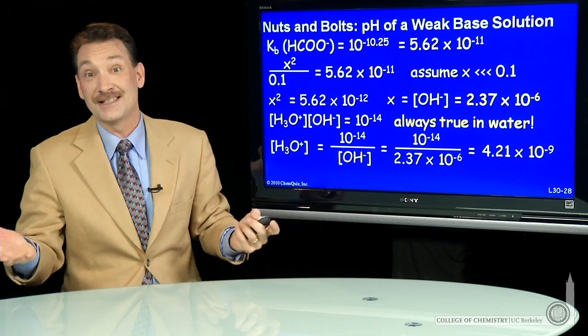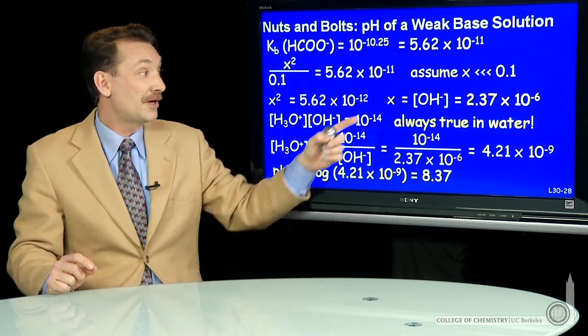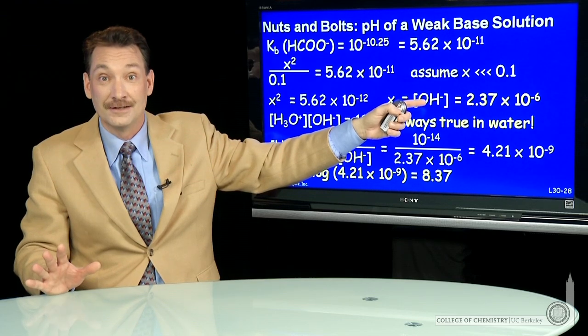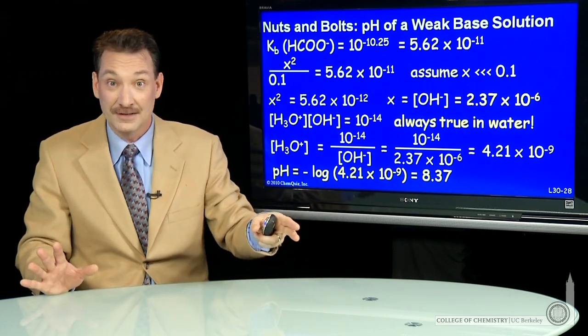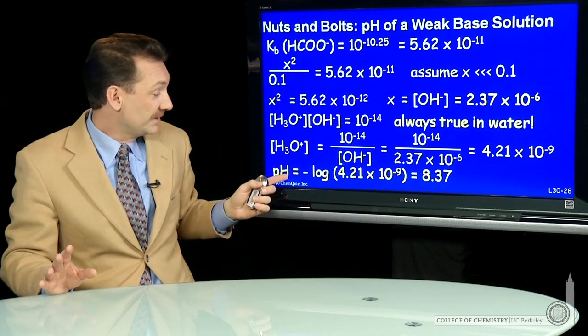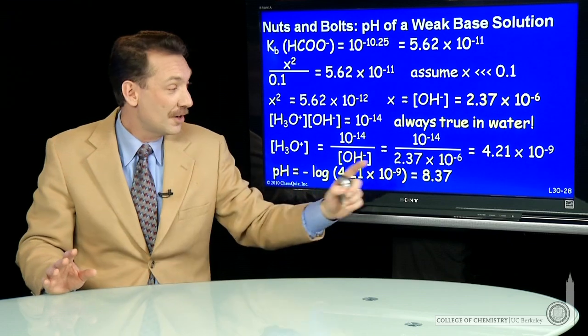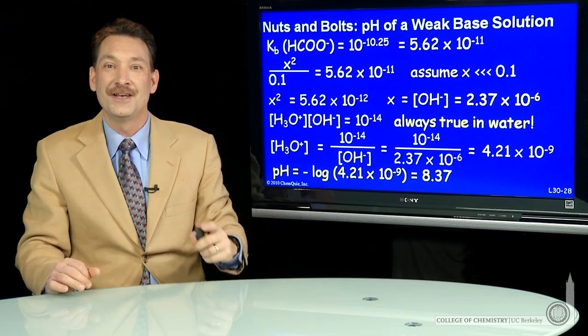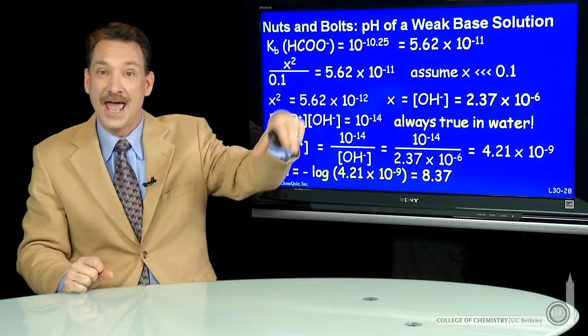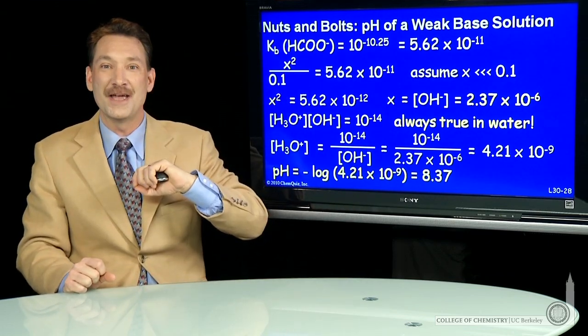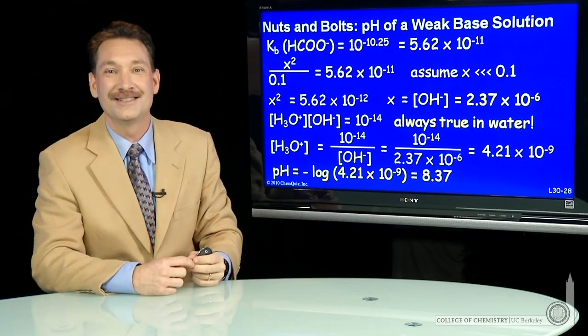Now I solve for H3O plus because that's how we get the pH. We take minus log of H3O plus. I could have taken minus log of OH minus. That would be the pOH and then subtracted that from 14. That's the same mathematics, basically. So the pH is minus log of H3O plus and 8.37. So here we have a salt of a weak acid formate ion added to water. It makes the water slightly basic. Here's how you do calculations with weak acids and weak bases.